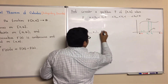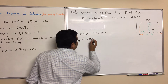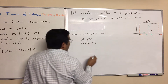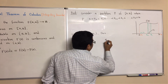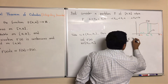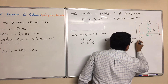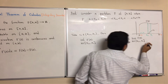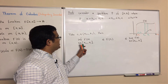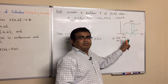On that interval, the infimum of F prime of x, where x is on [x(i-1), xi], is less than or equal to F prime of CI, which is less than or equal to the supremum of F prime of x on [x(i-1), xi]. This inequality is definitely true because the infimum is less than F prime of CI since CI is on this interval.